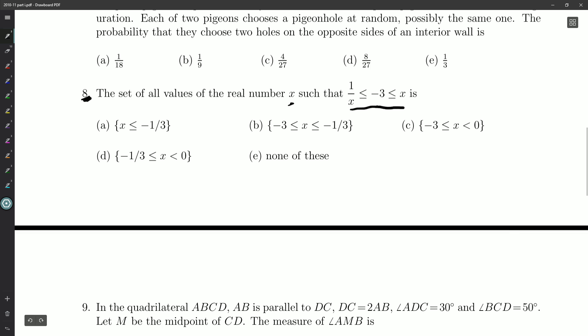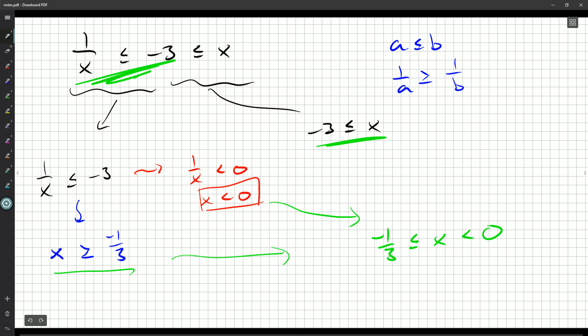And here it is, d. Option d matches up with our combined inequalities. So all we have to do is take a look at each part of the inequality and rearrange them so they tell us things about x rather than 1 over x. And that's sort of our general approach to such a question.